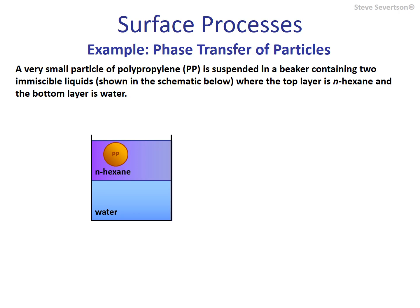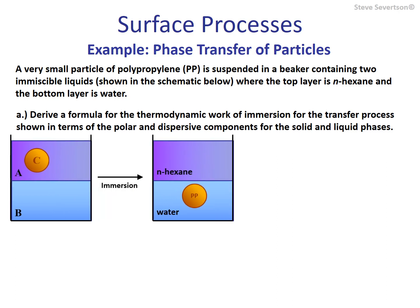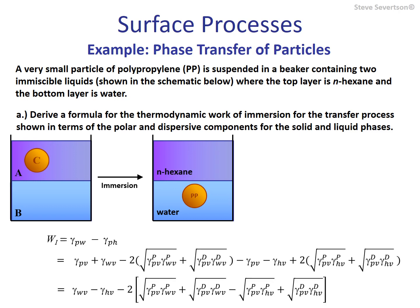We start out with the equation where the first term is the interfacial energy between the polypropylene particle and water (the final state), minus the interfacial energy between the polypropylene and hexane (the initial state). We substitute in our two-component approximation for estimating interfacial energy for both of these terms, ending up with a result that is a bit complex because it contains quite a few terms. In the next slide, we use this to make a calculation.